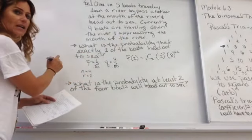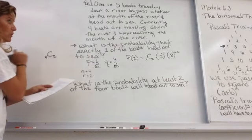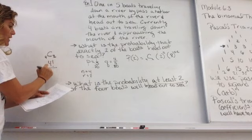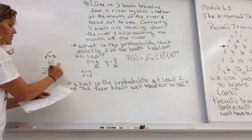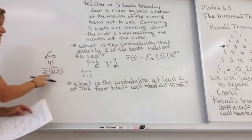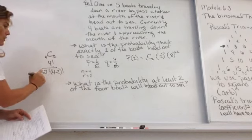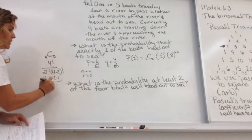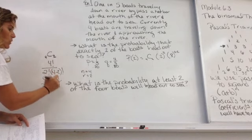Now, off to the side over here, I want to show you what the combination of four and two looks like. That is four factorial divided by two factorial times four minus two factorial. These two values have to add to this top number. So, four times three times two times one divided by two times one times two times one.